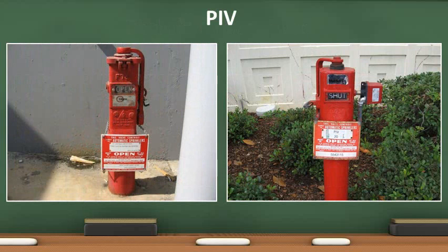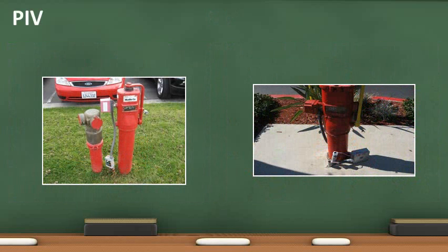These photos depict post-indicator valves, also known as PIVs. With this indicator valve type, look at the sight glass on the front to determine the valve's status. In the photo on the left, the valve is open. In the photo on the right, the valve is closed or shut. In the photo on the left, the cover for the tamper switch is missing. In the photo on the right, the J-Box has detached from the conduit. It is important to note that chains and breakaway locks are not required when there is a tamper switch installed, as in these photos.